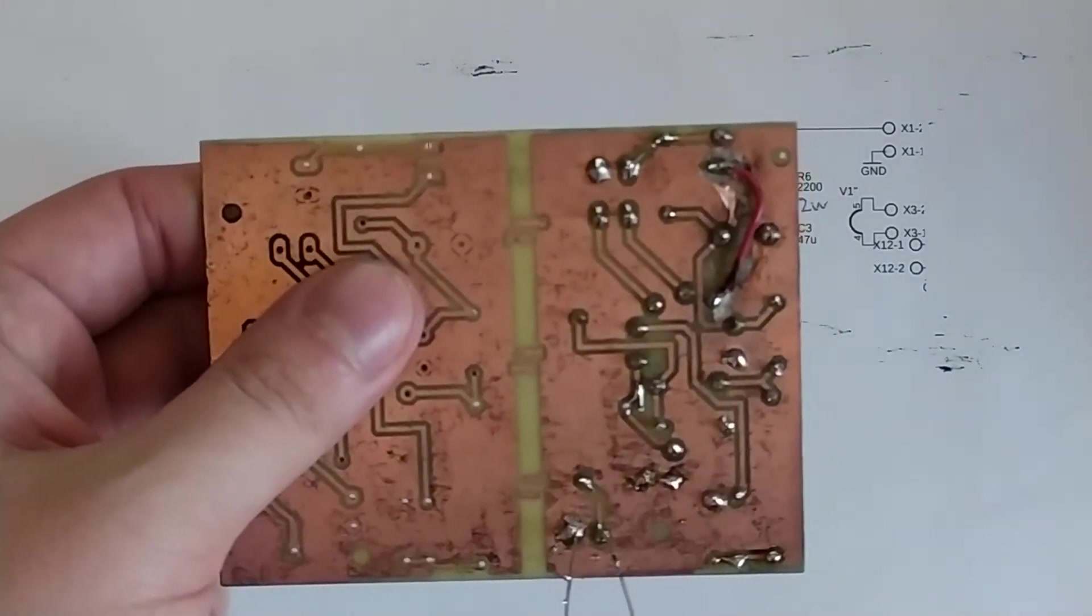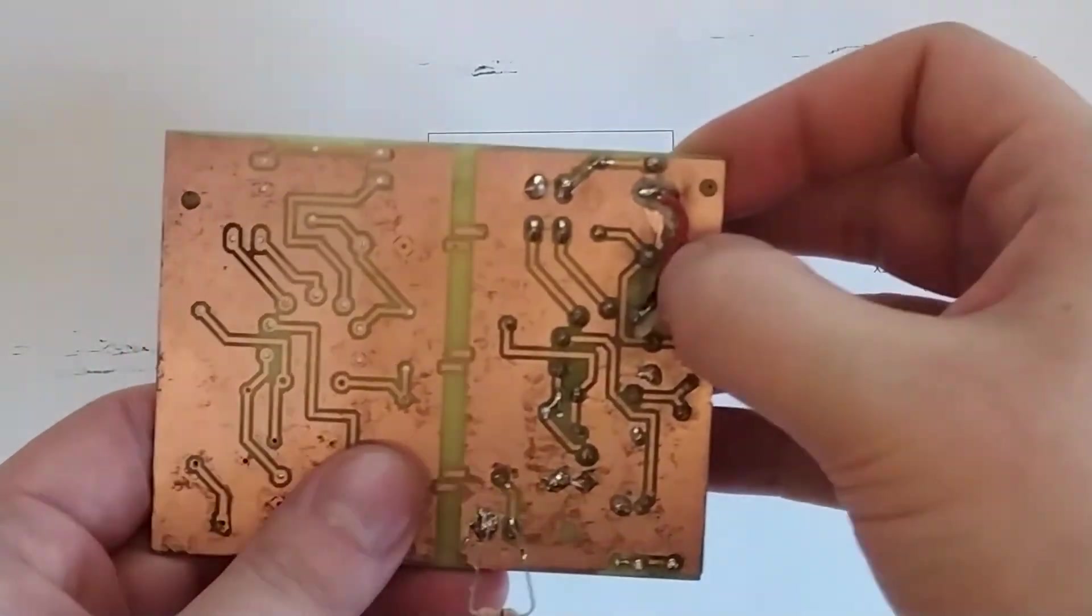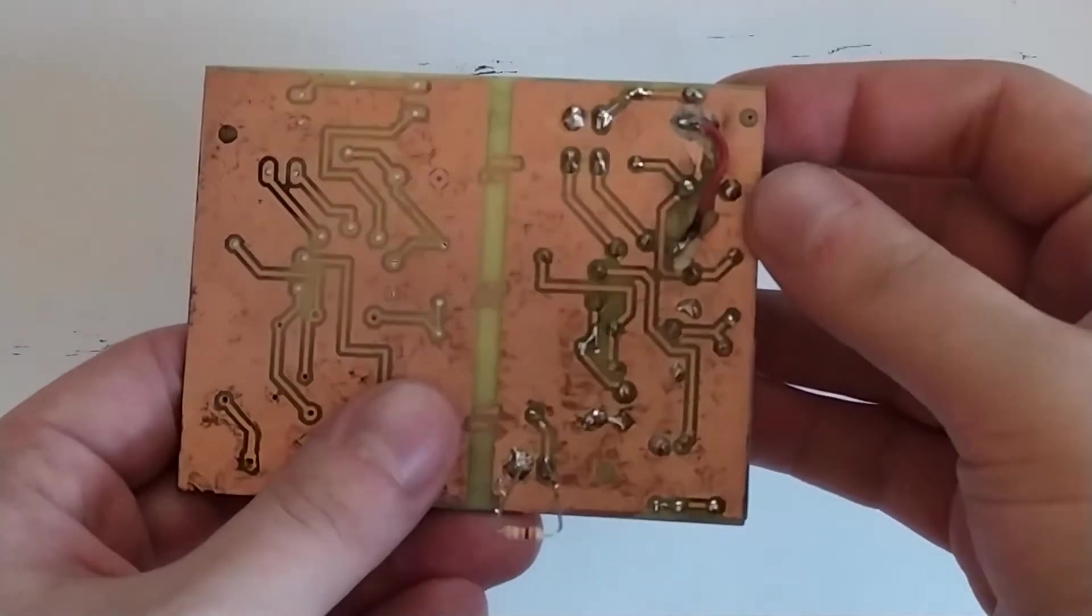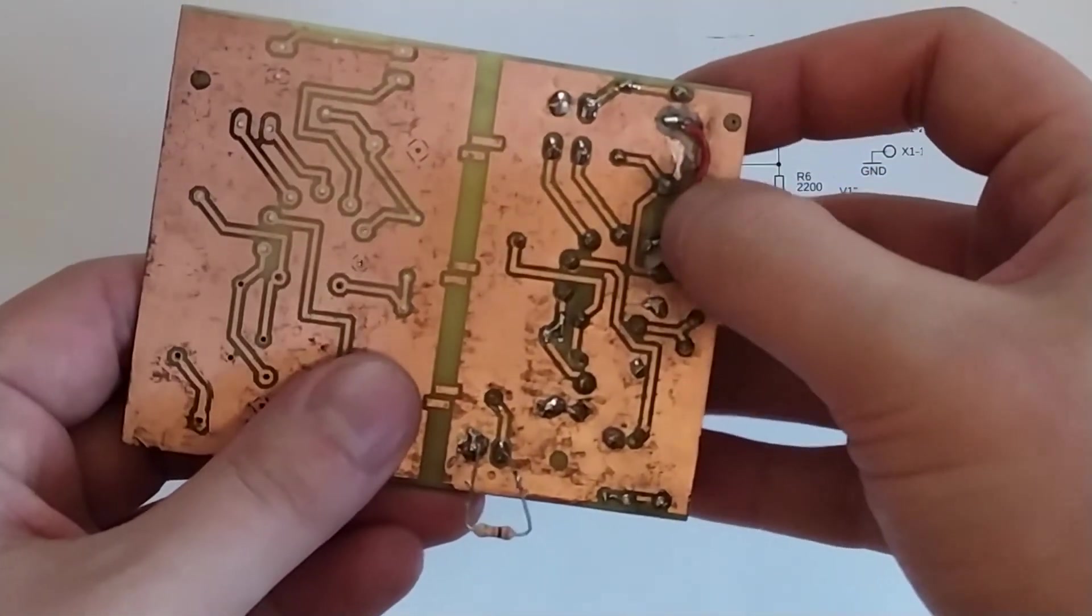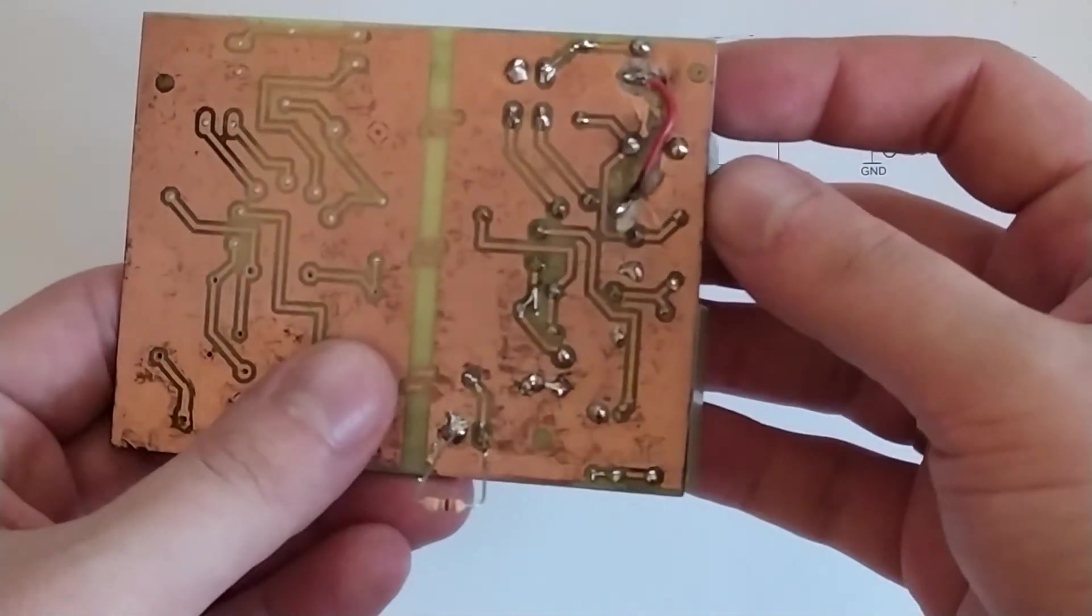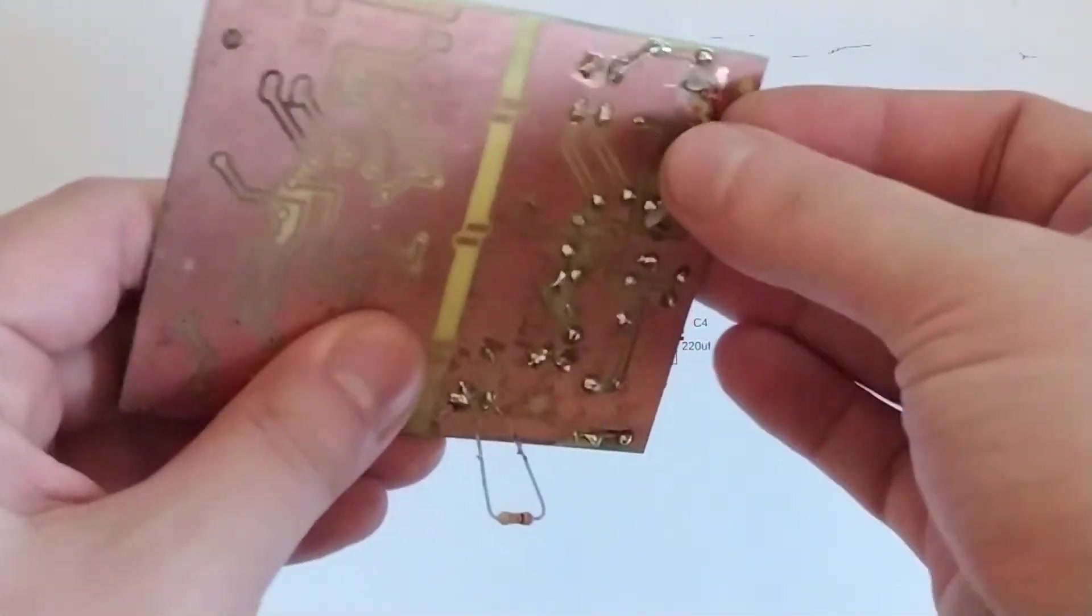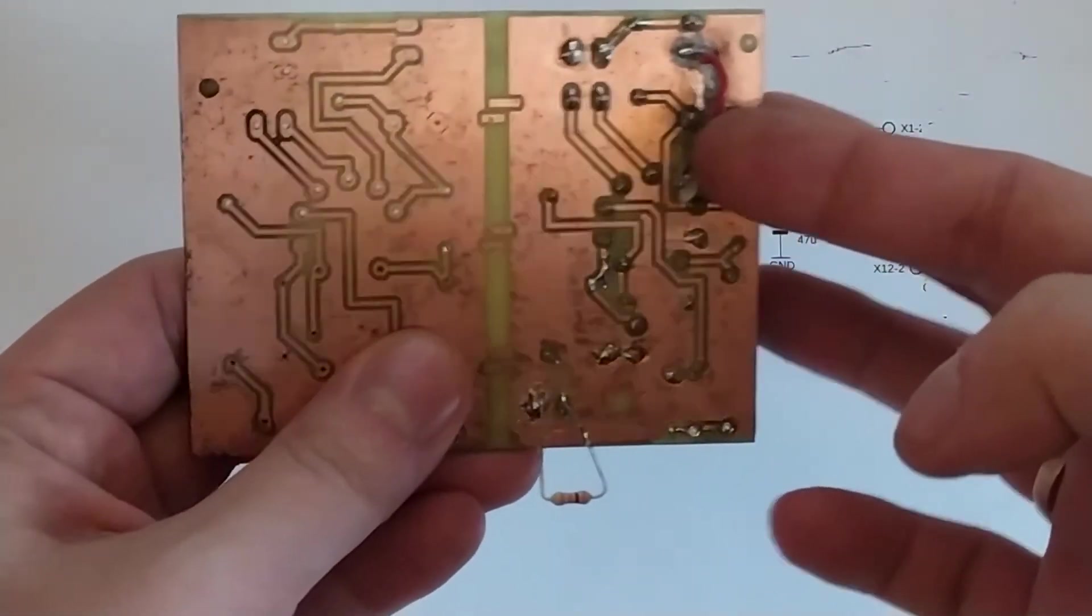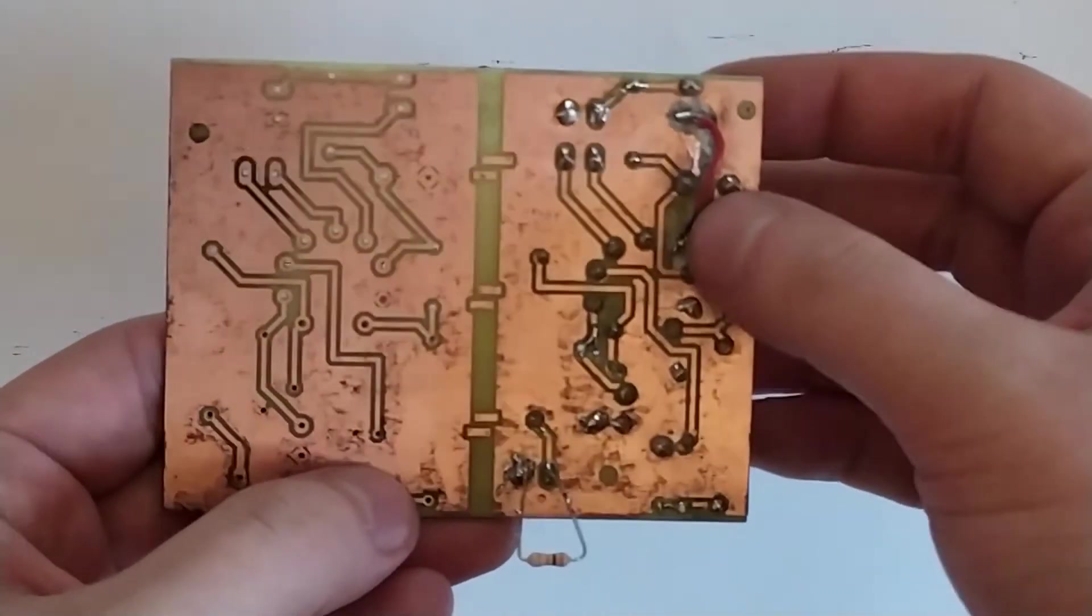You'll not only have 300 volts on here, but you'd also have it at 20 kilohertz, and that made this entire track here burn up and it got quite nasty. So I dremeled it all out and put a wire in there instead.